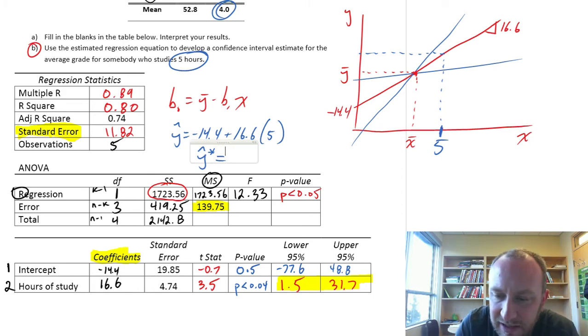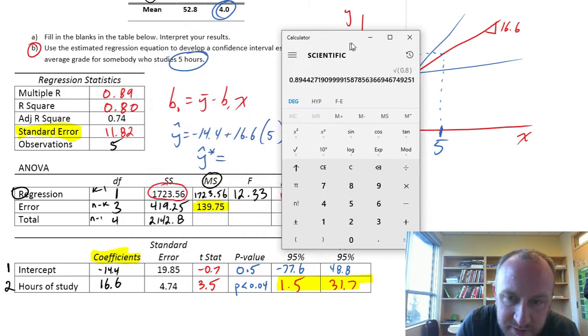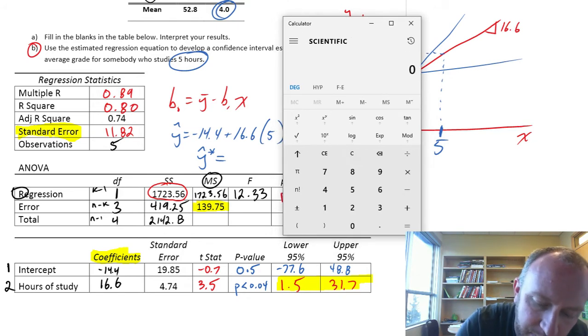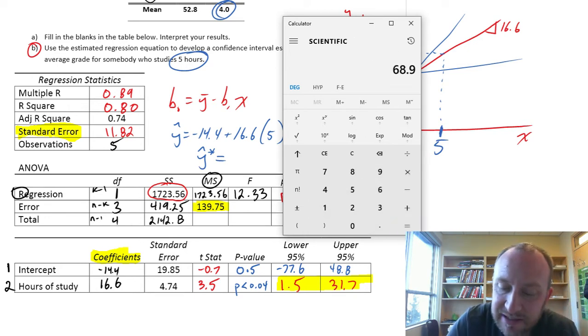let's call this y hat star. What this means is that for somebody who studies five hours a week, negative 14.4 plus 16.6 times 5 equals 68.9.